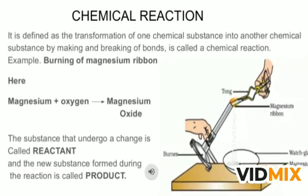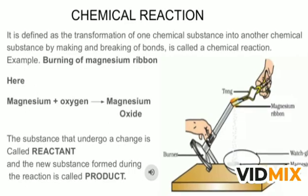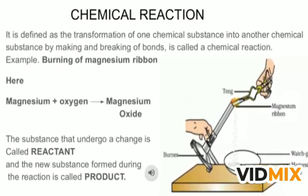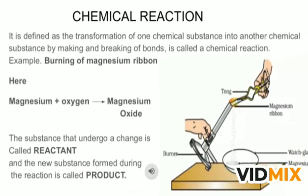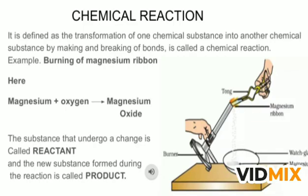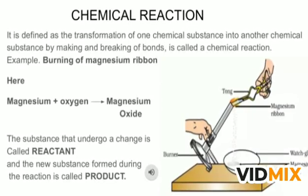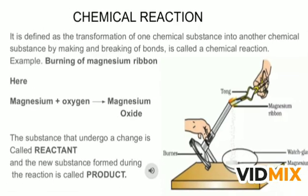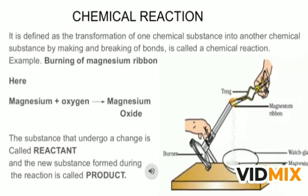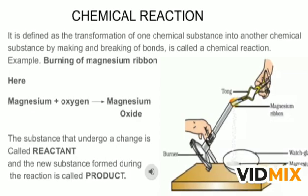Here I have taken an example of magnesium burning. We have a pair of tongs in which we've held a magnesium ribbon and we are burning it using a burner. When we burn it, the magnesium ribbon burns with a dazzling flame and converts into ashes. These ashes are collected in a China dish or watch glass. So this is a chemical reaction. Here, magnesium came into contact with air, reacted with oxygen, and formed magnesium oxide. Magnesium and oxygen are reacting with each other to form another compound, magnesium oxide, which is collected in the watch glass in the form of ashes.